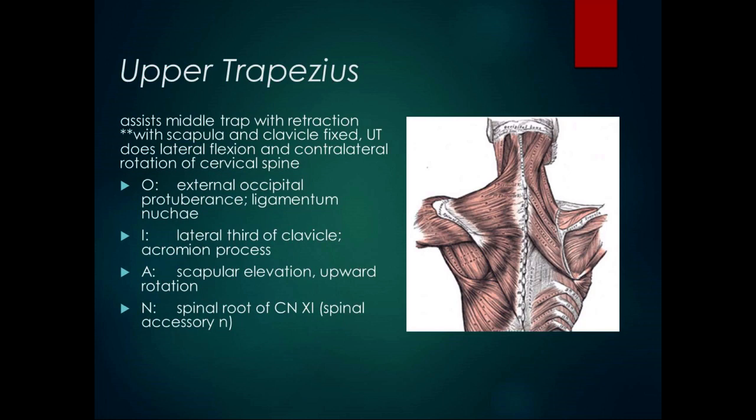Its insertion is the lateral third of the clavicle and the acromion process. When the insertion moves towards the origin, you get scapular elevation. It's innervated by the spinal root of cranial nerve 11, which is unusual. The entire trapezius is innervated that way. The rest of the upper extremity muscles are innervated by nerves coming off the cervical spine and going into the brachial plexus, so the upper trapezius is unique in that.